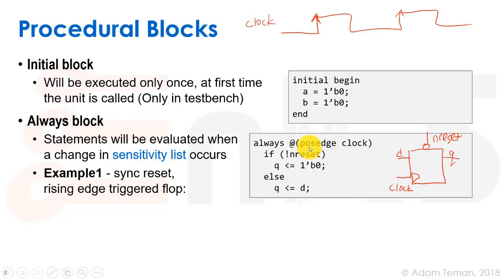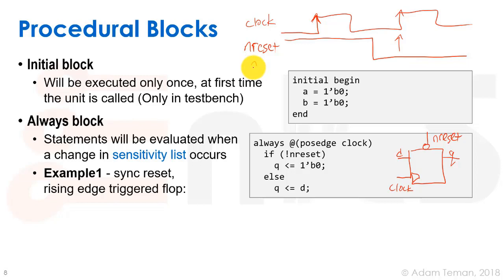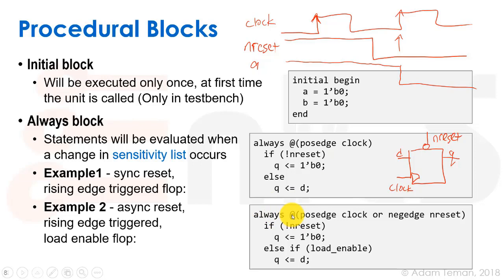This is actually a synchronous reset flip-flop. Why synchronous? Because we only evaluate this code on the positive edge of the clock. If n_reset goes low, it will only be evaluated at the rising edge of the clock — the output q stays whatever it was until then. For an asynchronous reset, we write 'always @(posedge clock or negedge n_reset)', so either the clock rising or n_reset going low triggers the block.